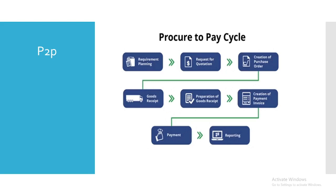After vendor selection, the purchase order is created. The vendor then sends the goods to our warehouse, we check the items, and then an invoice is created for those items. We cross-check the invoice through invoice verification and make the payment. Finally, reporting is completed. This is the complete P2P process.